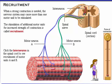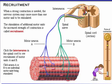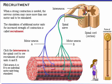Click the interneuron in the spinal cord to see recruitment of motor units A and B. Click neuron A or B to see individual motor units being stimulated.